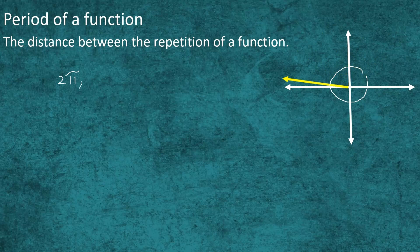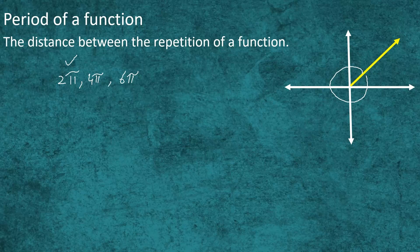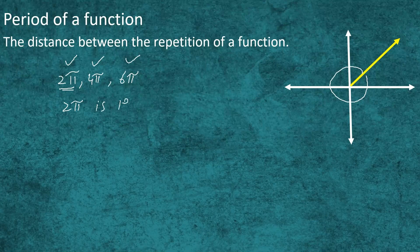Taking one more revolution, it covers 2π units more, so the total distance will be 4π. If it takes one more revolution, a distance of 2π units is added and it becomes 6π units. We have seen that this function has repeated itself after 2π, 4π, and 6π units. Here, 2π is the smallest of these, so 2π is the least distance and is called the least period. 2π, 4π, and 6π are all periods of this function, but 2π is the least period.